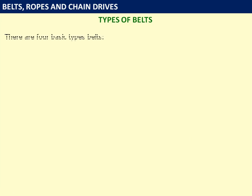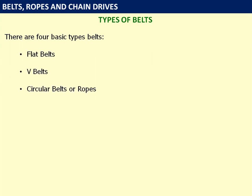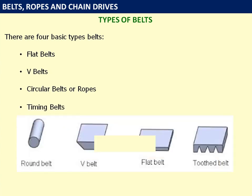Types of belts: there are 4 basic types of belts — flat belts, V belts, circular belts or rope drives, and timing belts. This figure shows the various cross-sections of the above belts. The first figure shows round belt, second shows the cross-section of V belt, third shows the flat belt, and fourth shows the toothed belt or timing belt.